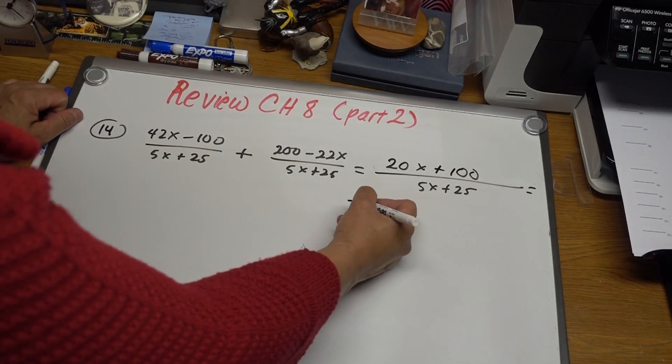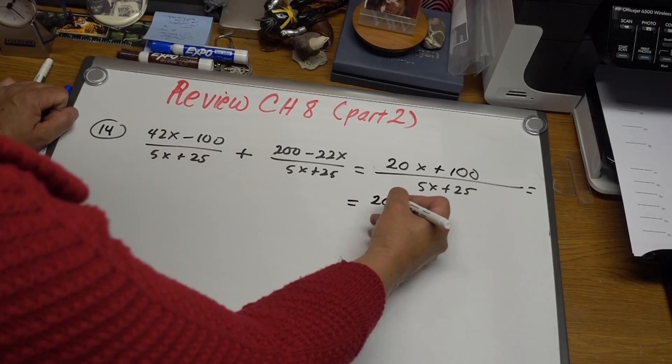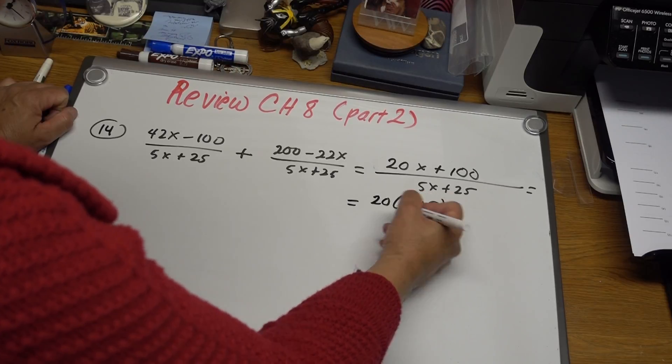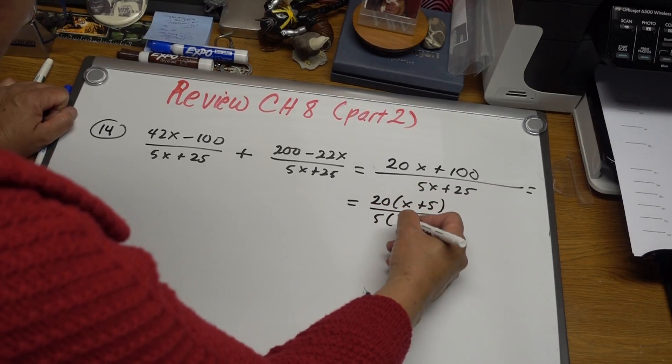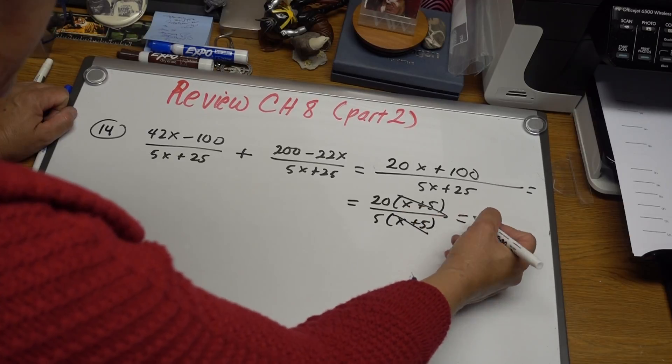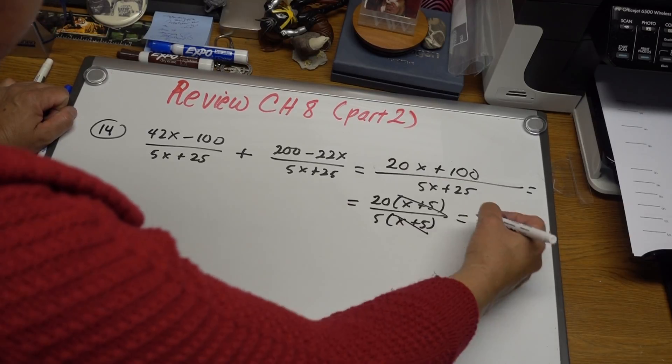Now, from here, we just simplify. We have 20 times x plus 5 on the bottom, we have 5 times x plus 5. Cancel this x plus 5. 20 divided by 5, the answer is 4.